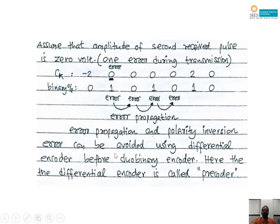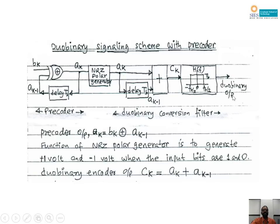These two errors — error propagation and polarity inversion error — can be avoided using a differential encoder placed before the duo binary encoder. This differential encoder is known as a pre-coder, because it comes before the duo binary system. Using the pre-coder, two advantages are gained compared to the basic duo binary system: no polarity inversion error and no error propagation. The second system is duo binary signaling with a pre-coder, using one extra differential encoder.